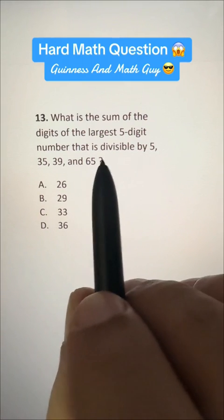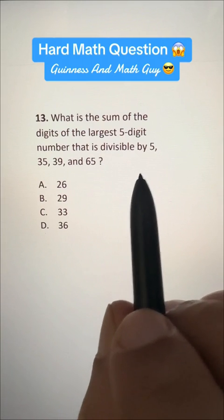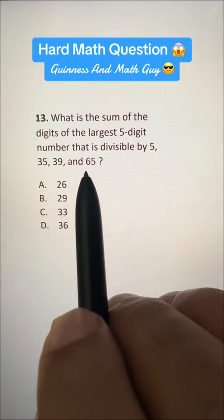What is the sum of the digits of the largest 5-digit number that is divisible by 5, 35, 39, and 65?